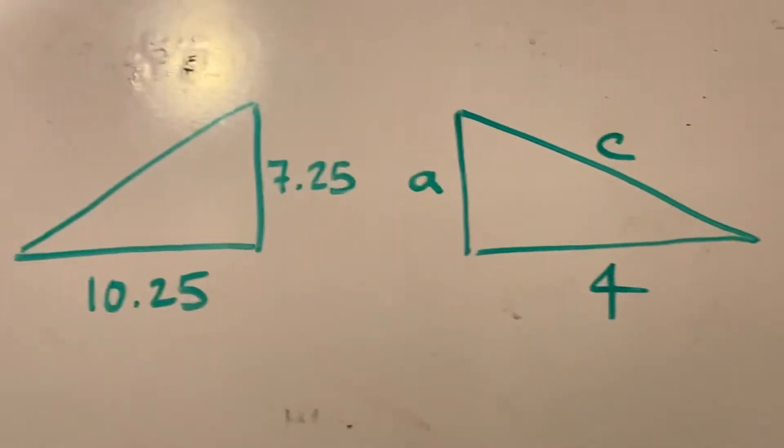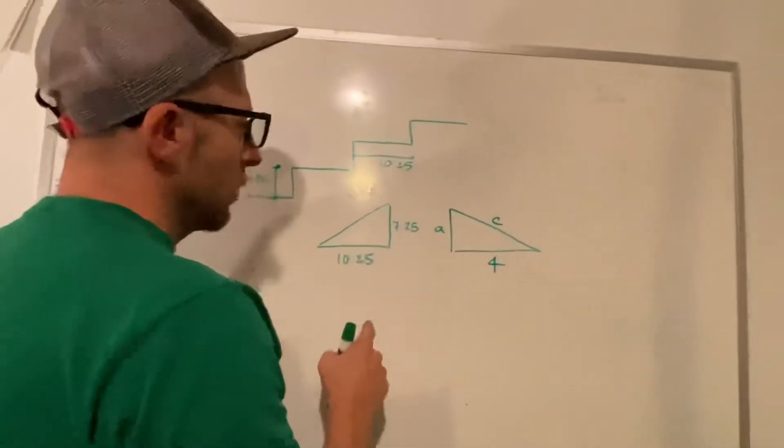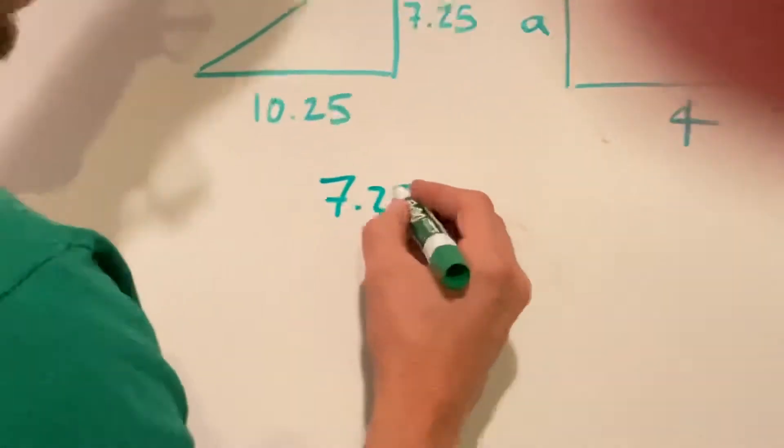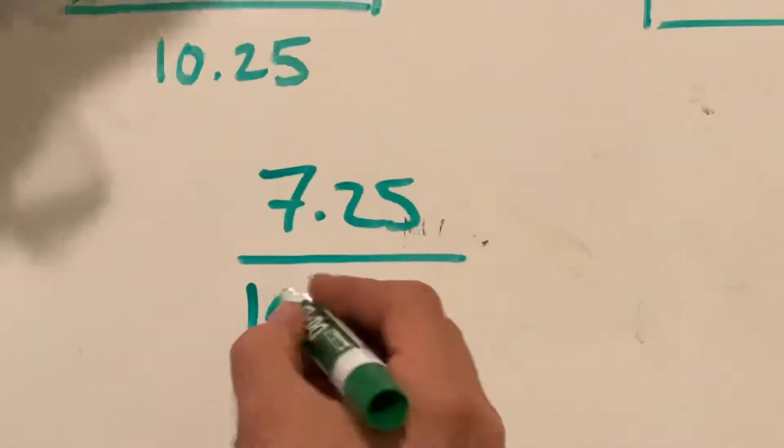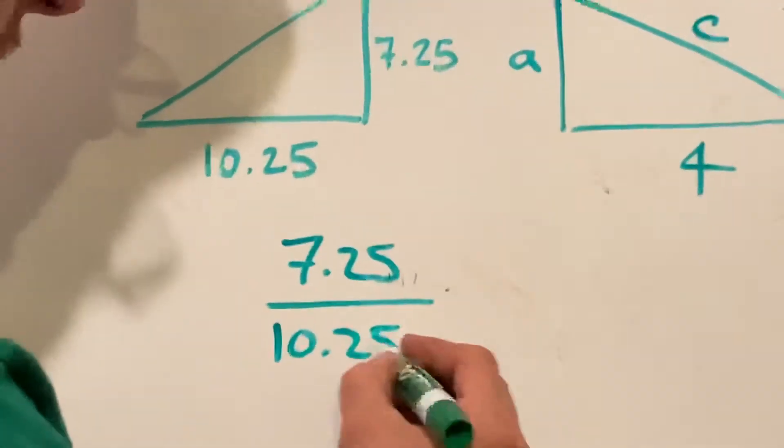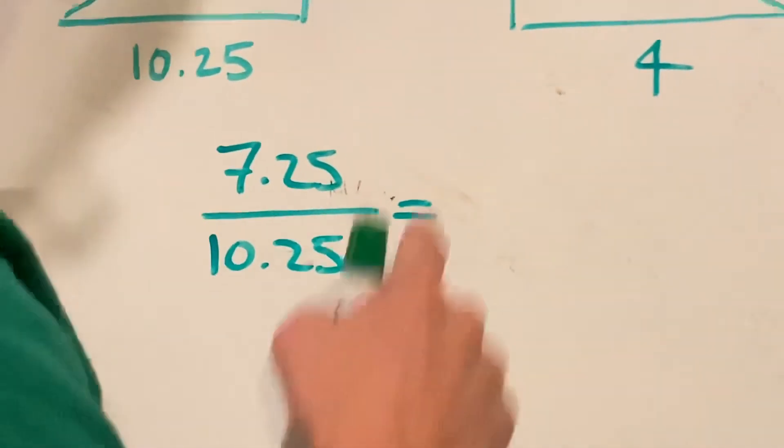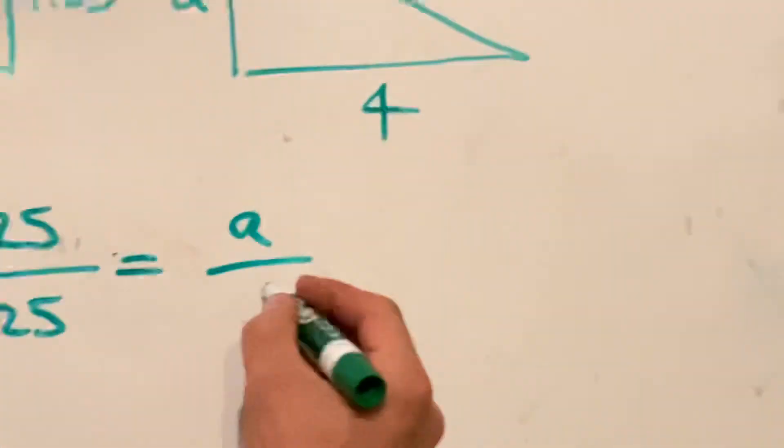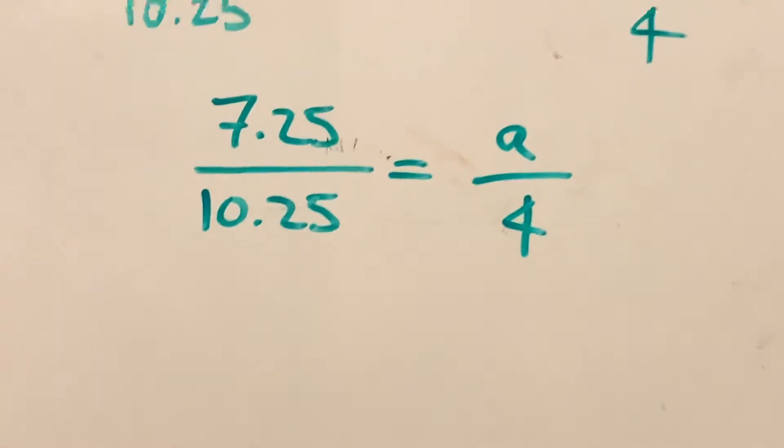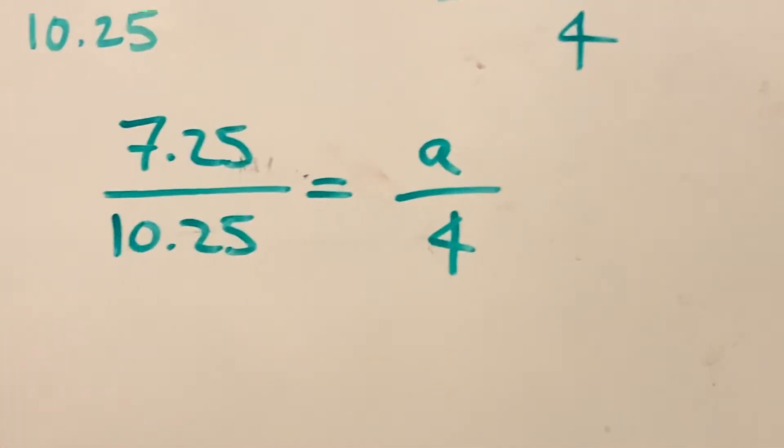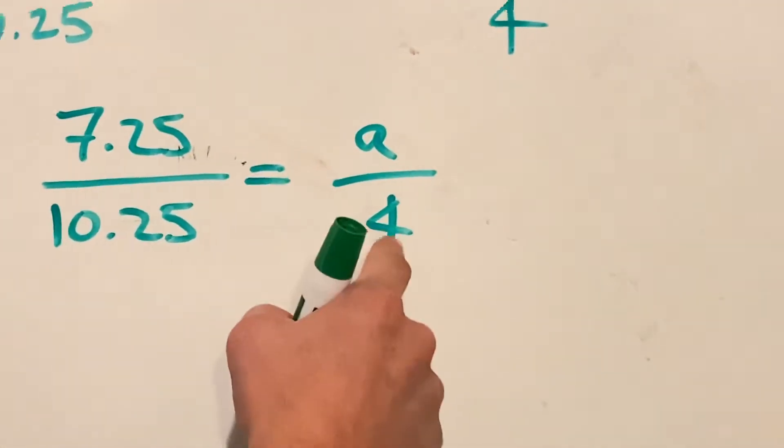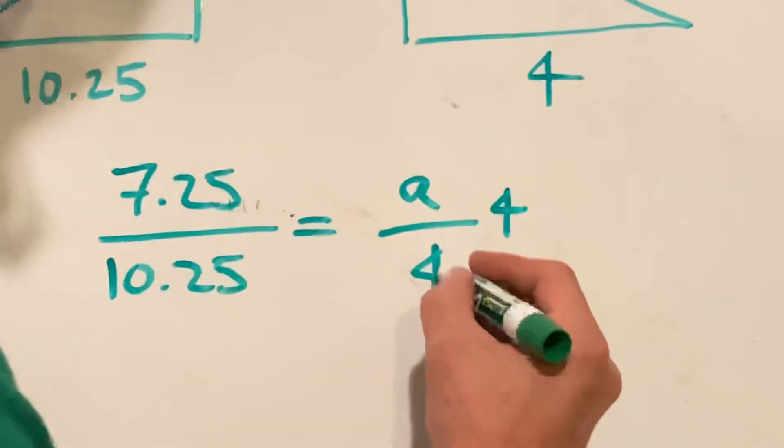So we just have to set up a little equality here. We're going to say 7.25, its ratio to 10.25 is equal to a over four. So if you remember back to like seventh, eighth grade algebra to get that, we want to get a by itself so we can solve it. We're going to multiply both sides by four.